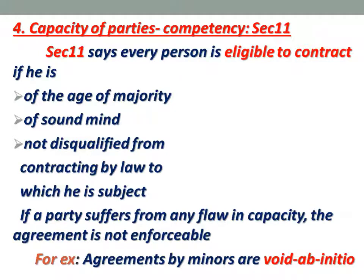The fourth essential element is capacity of the parties. The parties to a contract should be competent to contract. Section 11 clearly states that every person is eligible to contract if he is of the age of majority, of a sound mind, and not disqualified from contracting by any law to which he is subject. He should not be a minor, not a person of unsound mind, and not disqualified by law. An agreement by a minor is void ab initio.